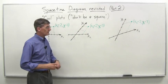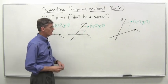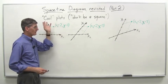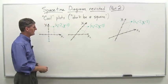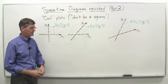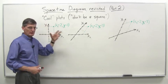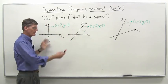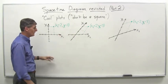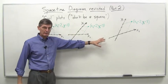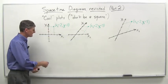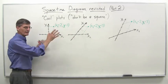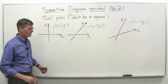On to part two of our revisitation of space-time diagrams, and the subject here is 'cool plots' — don't be a square. The idea is if you want to be cool and with it, you don't want to be a square. As you'll see from the diagrams, we're doing some sort of strange type of plotting here — non-square plotting. If you don't like that reference, you can ignore it; it's not important for our purposes here.